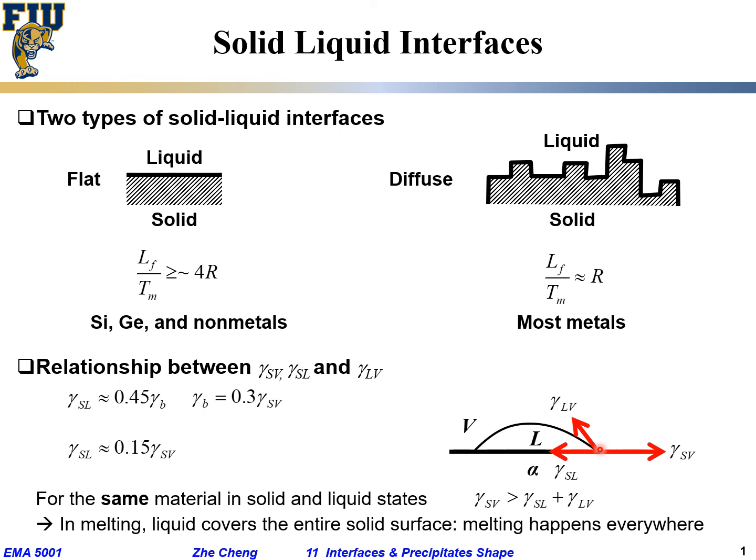If the solid-vapor term pointing towards right is much larger, the interface would go towards right, which means the liquid when it's melt has a tendency to spread out over the entire solid surface. When you think of ice, how does it melt? The ice melts all around onto its surface; everything out on the surface becomes liquid everywhere, covered by liquid water.